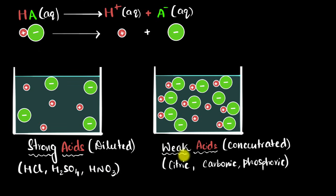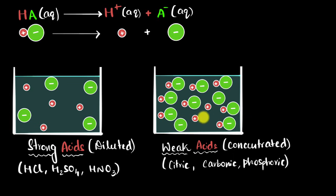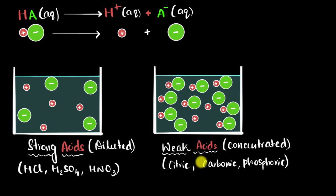So you can see: strength is a measure of how much they dissociate — 100% dissociation means strong, partial dissociation means weak. But remember, concentration is how much acidic molecules you have per liter — very concentrated if a lot, diluted if a little. And finally, if you're thinking about weak bases, bases are slightly more complicated, so we won't talk too much about them.